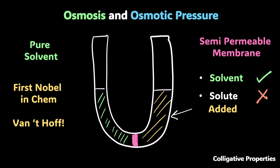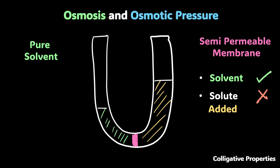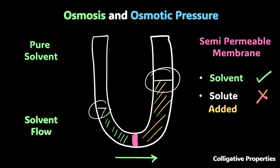Now, this membrane allows the flow of solvent, but not the solute. So there's some imbalance created, and what we see is that solvent pushes through in this direction. The level of pure solvent, if it's water, rises up here and falls down. This process is known as osmosis — you've got a semi-permeable membrane, a solvent, and a solution, and the flow from the solvent side to the solution side is osmosis.